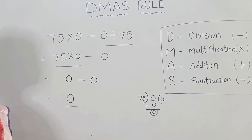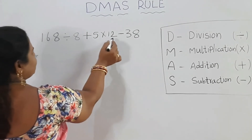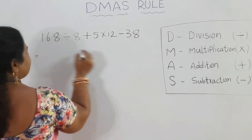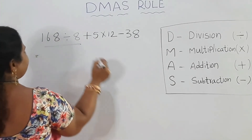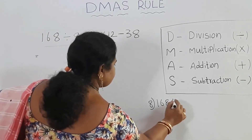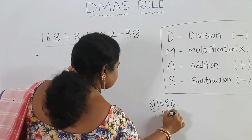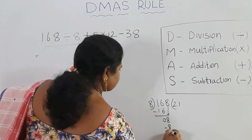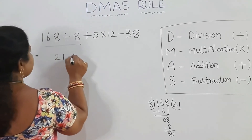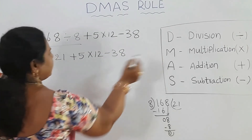Let's do this. Look here. Here we have one more example: 168 divided by 8 plus 5 into 12 minus 38. How will we solve this problem according to DMAS rule? First, division: 168 divided by 8 equals 21. Write 21 here.